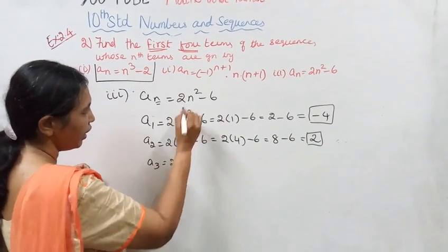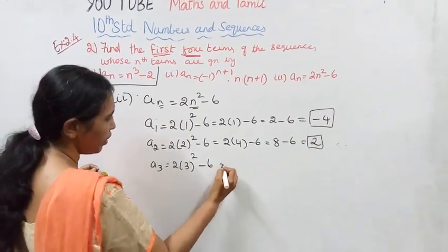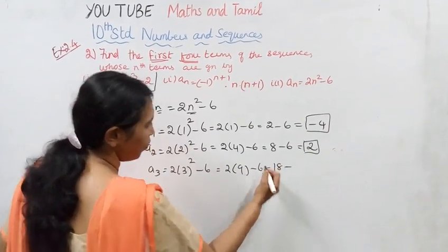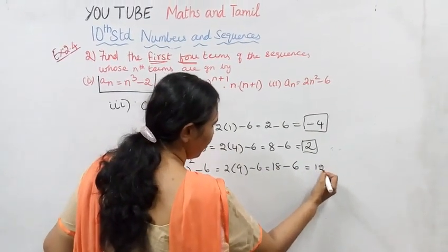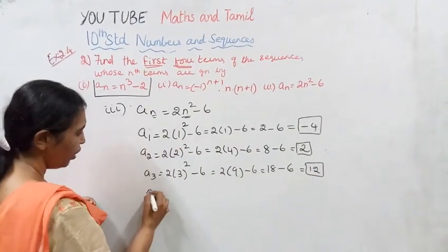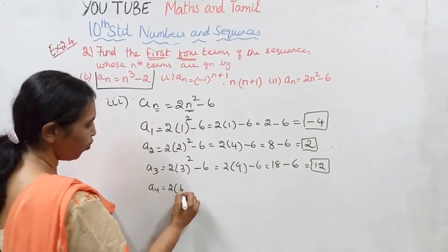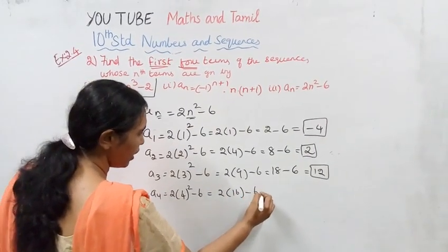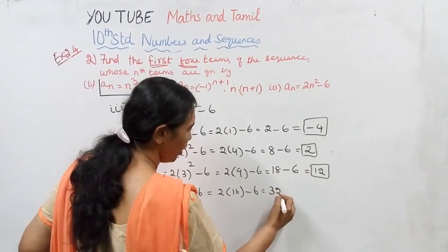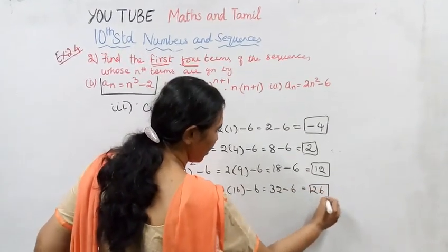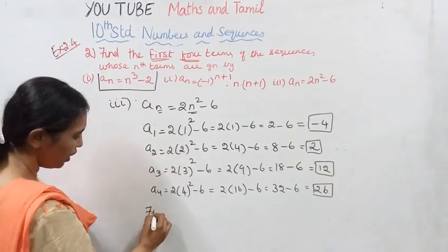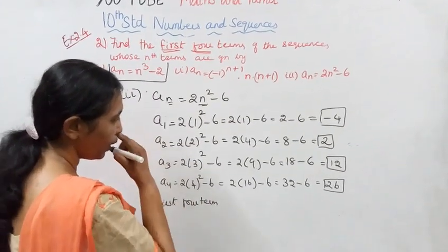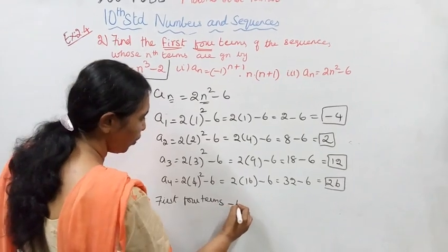a_3: 2 into 3 square equals 2 into 9 equals 18, minus 6 equals 12. a_4: 2 into 4 square equals 2 into 16 equals 32, minus 6 equals 26.